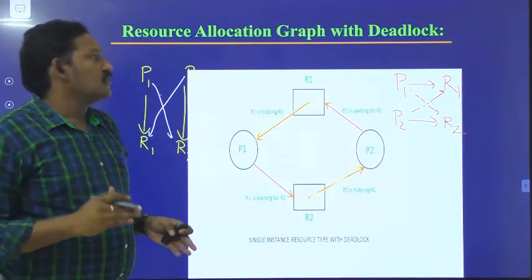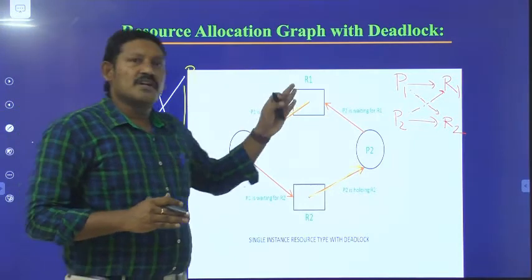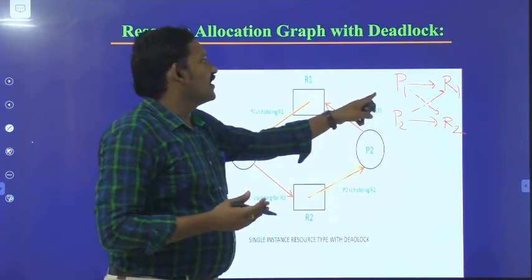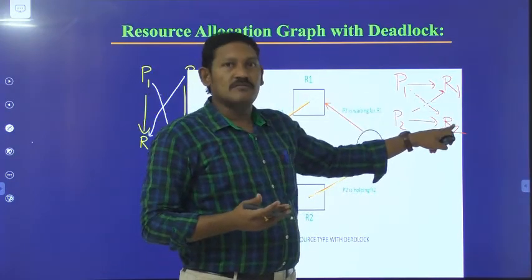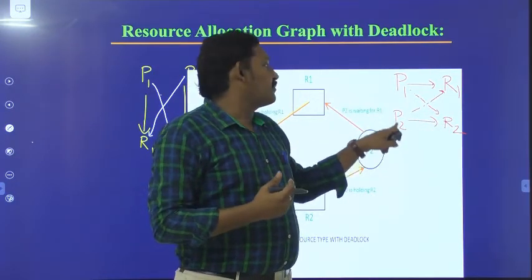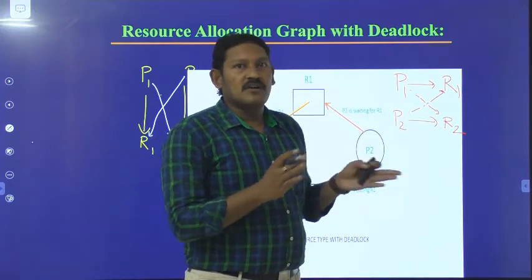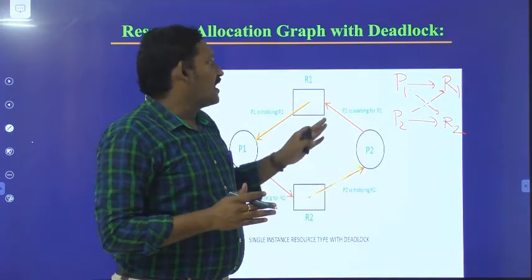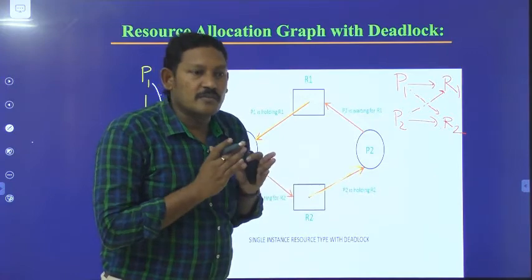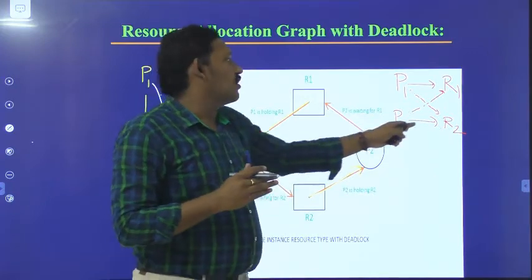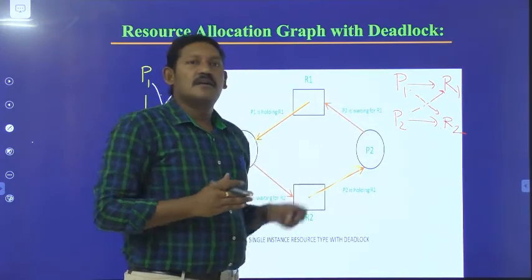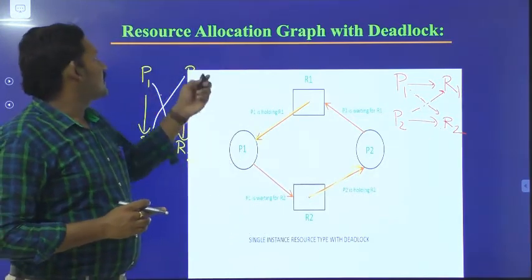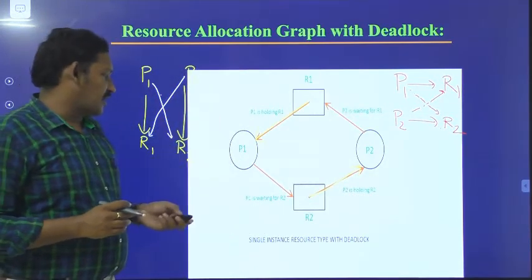Here the deadlock has occurred — this will not finish. P2 will keep on holding R2, P1 will keep on holding R1. P1 will release R1 when it gets R2; R2 will be released when P2 gets R1. So the deadlock has occurred: P1 holds R1 and waits for R2, P2 holds R2 and waits for R1. This is the Resource Allocation Graph with deadlock.